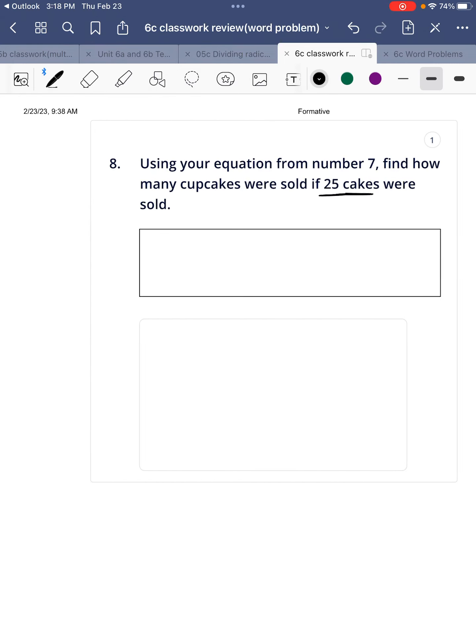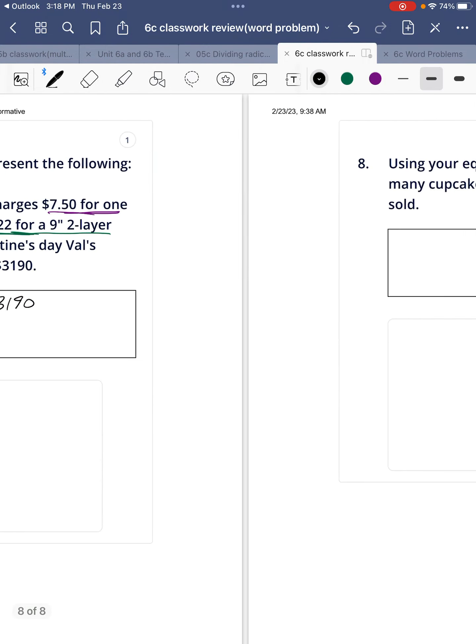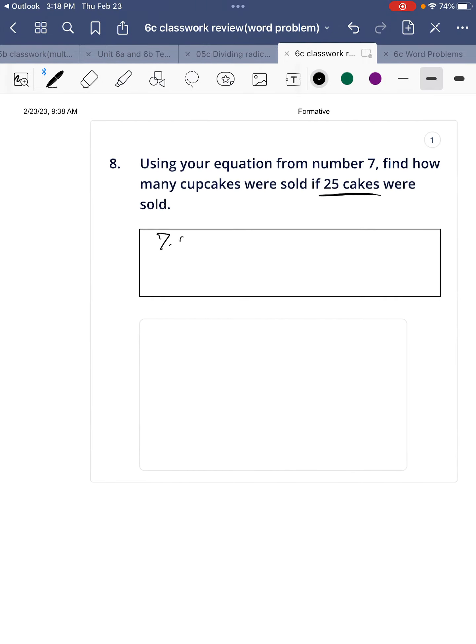Alright, looking at if 25 cakes were sold, how many cupcakes were there? So in our equation, we have $7.50x plus $22 per cake, so $22 times 25. And that's going to equal $3,190. So $7.50x, 25, 20 times, so that's $450.